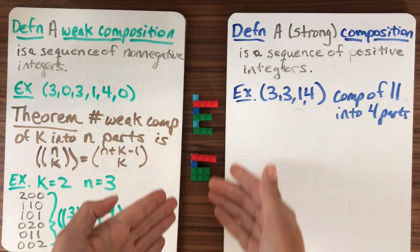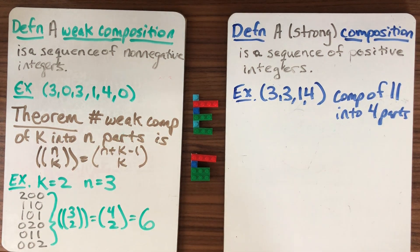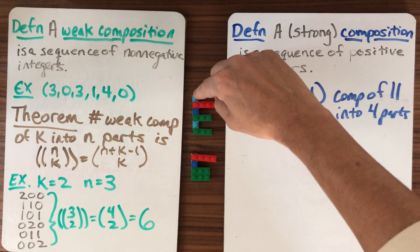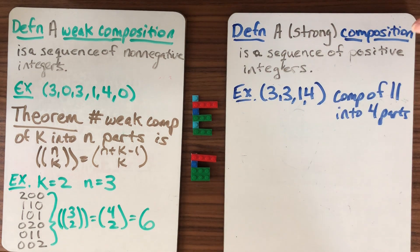But of course this process isn't going to help me count these strong compositions. And the reason is because I could have had this part of length four up here, and it would still drop to the same thing. So there's a lot of overcounting that's happening if I think about it this way. So this isn't a great way for me to try to visualize it.